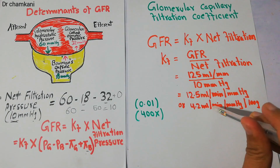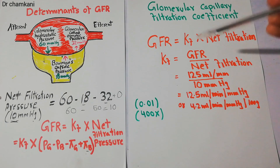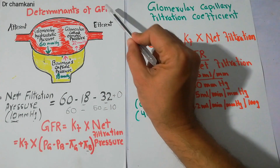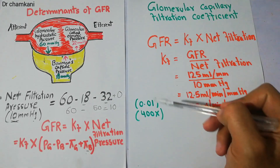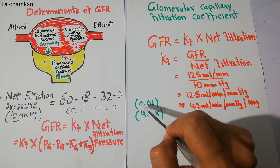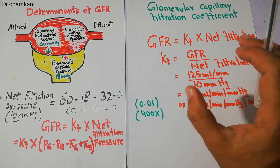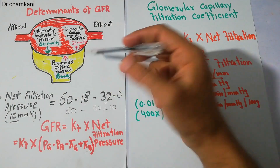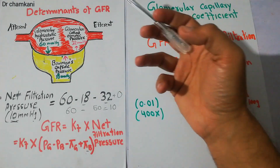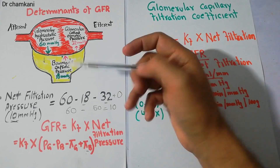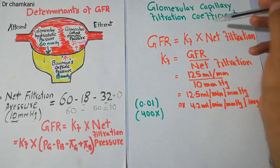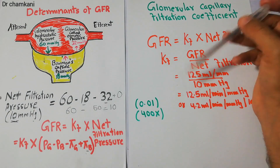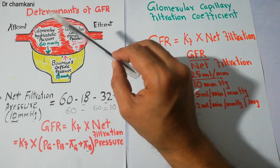This value of 4.2 ml per minute per mmHg per 100 grams of kidney mass is very high — approximately 400–500 times more than that of any other capillary. In other areas of the human body, this value is around 0.01 ml per minute per mmHg per 100 grams of tissue. In the kidneys, the high filtration coefficient contributes to a high filtration rate, which is critical for urine formation since filtration is the first step. Both surface area and permeability determine the filtration coefficient, making it very high in glomerular capillaries.